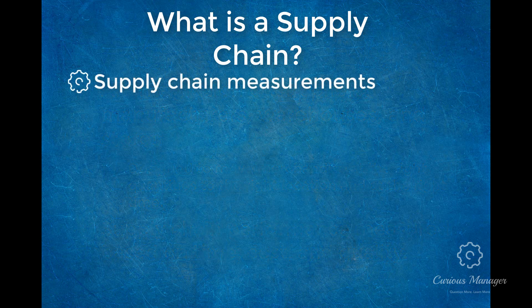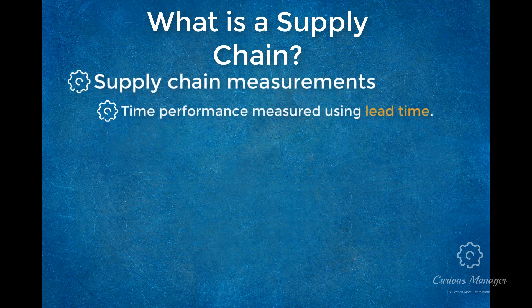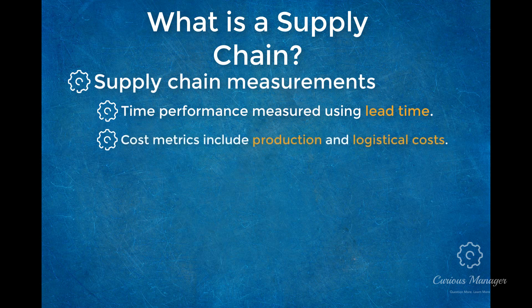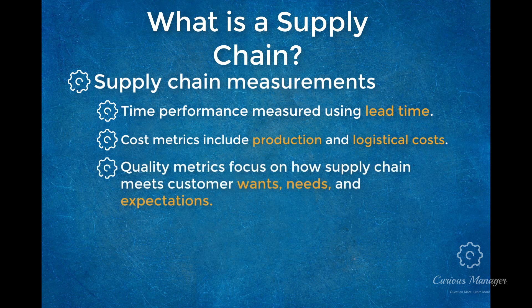The main measurement used for measuring time performance is lead time. Cost metrics focus mainly on product production costs, reflected in material and labor costs, and logistical costs associated with the transportation and storage of inventory. Quality metrics tend to focus on how the supply chain meets customer needs, wants, and expectations by focusing on reducing variability in lead time while improving demand forecasting accuracy.